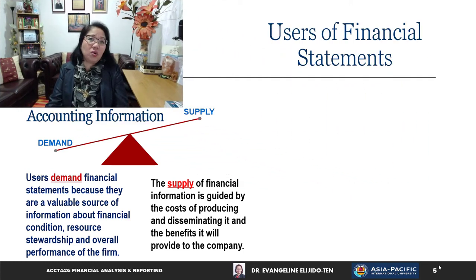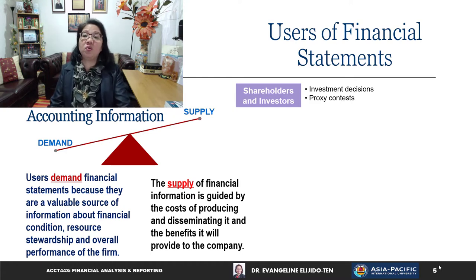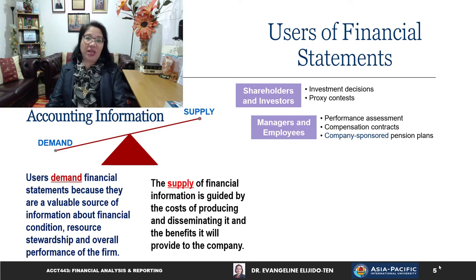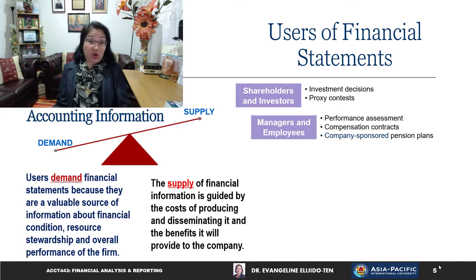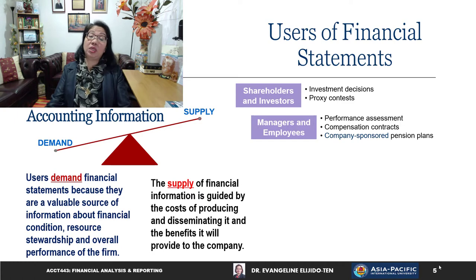Who are the users of financial statements? Obviously, shareholders and investors — including prospective investors — are one of the main users; they need financial information to make investment decisions. Managers and employees of the organization are also interested users: managers want to know how well the company is performing and need to make decisions about compensation contracts, while employees want to know about their pension and company-sponsored pension plans.